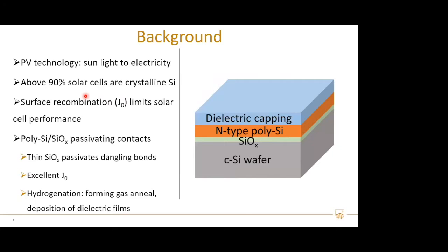In recent years, solar cell structures with doped poly-silicon on ultra-thin one to two nanometer oxide have been widely applied, due to efficient surface passivation provided by the thin oxide and field-effect passivation given by the doped poly. In addition, it is widely agreed that additional hydrogen treatment — adding hydrogen into the poly-silicon/silicon-oxide passivating contacts — can further improve surface passivation.